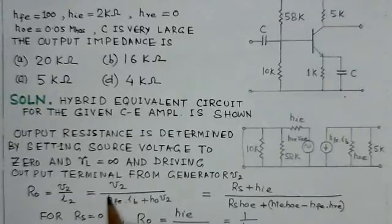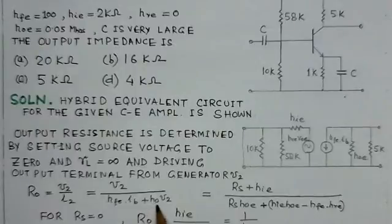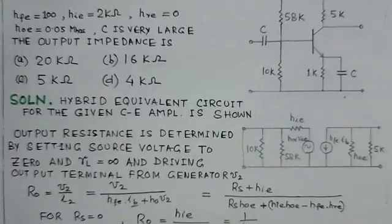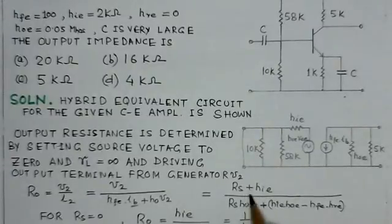We put a voltage source V2 here and try to find the current I2 flowing into the circuit. As per this equivalent, you get V2 divided by HFE IB plus HOE V2. If I substitute the value for IB, we will get an expression: RS plus HIE divided by RS HOE plus HIE HOE minus HFE HRE.